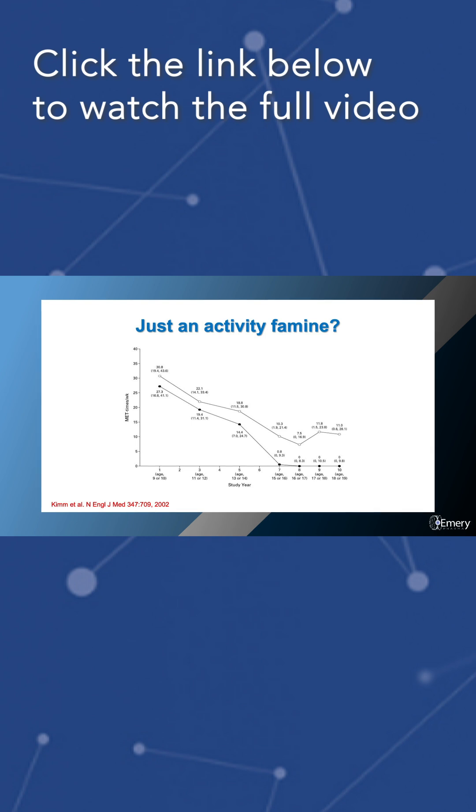And here we have American girls, white here, black here. And you can see that as they get older from 9 to 19, their physical activity goes down so significantly that by the time they reach age 15, the black girls are basically prostrate on the floor, according to this.